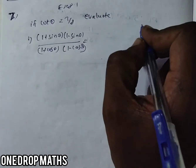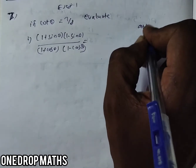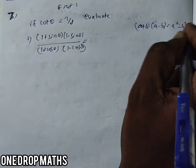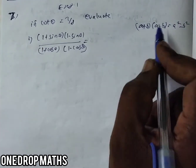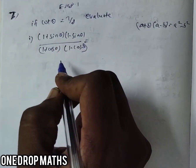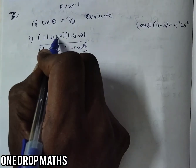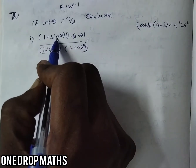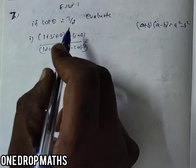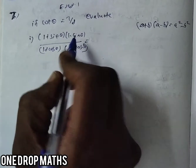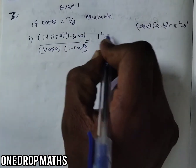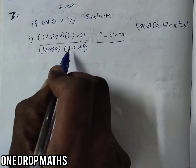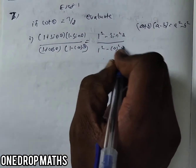Before entering this sum, remind yourself that (a plus b) into (a minus b) can be written as a squared minus b squared. I am going to apply this identity to the numerator and the denominator. In the numerator, (1 plus sin theta)(1 minus sin theta): here in place of a is 1 and in place of b is sin theta, so it becomes 1 squared minus sin squared theta. Same for the denominator: (1 plus cos theta)(1 minus cos theta) becomes 1 squared minus cos squared theta.